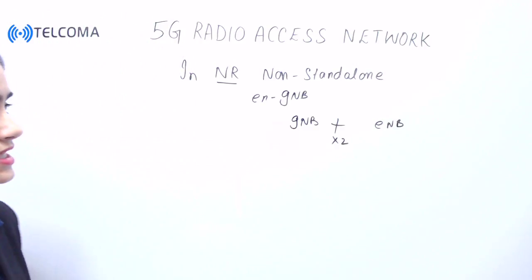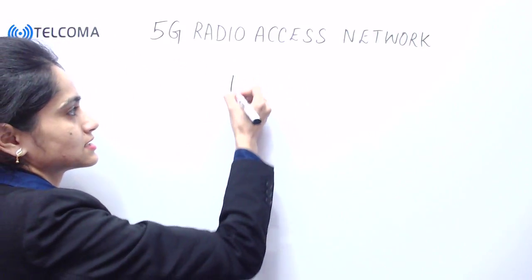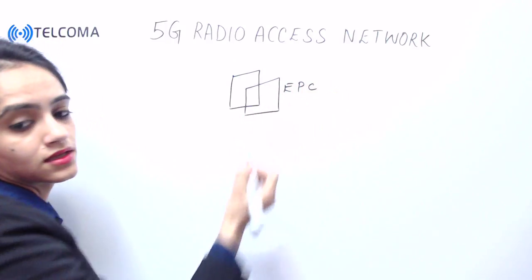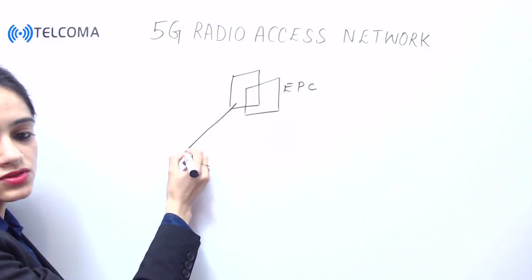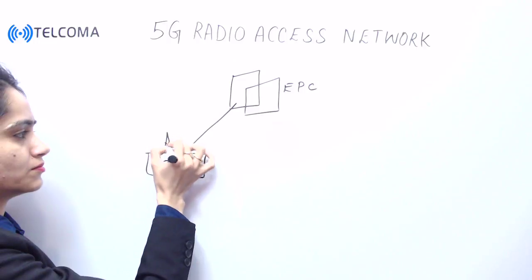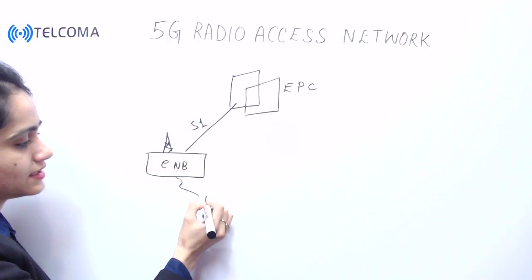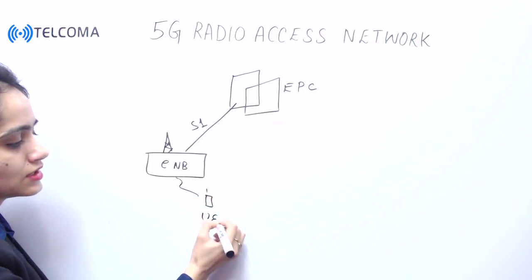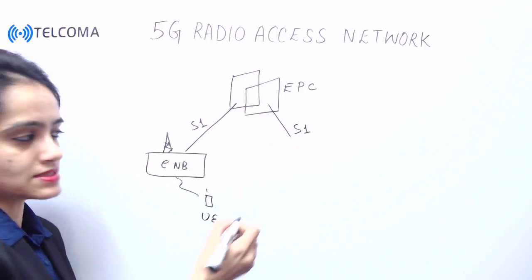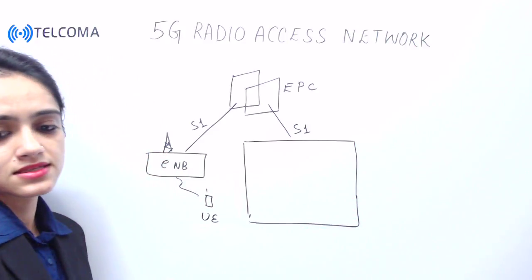If we make a diagram of this: the Evolved Packet Core (EPC) is connected to the LTE eNodeB via the S1 interface. The eNodeB is then connected to the user equipment (UE). So in non-standalone operation, similarly, the EPC is connected via the S1 interface to the CU (centralized unit).